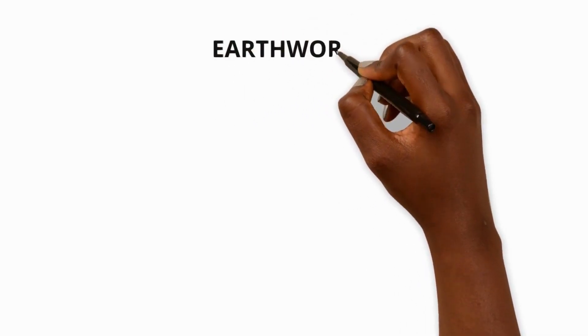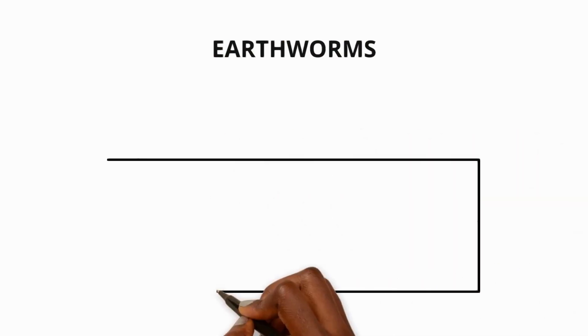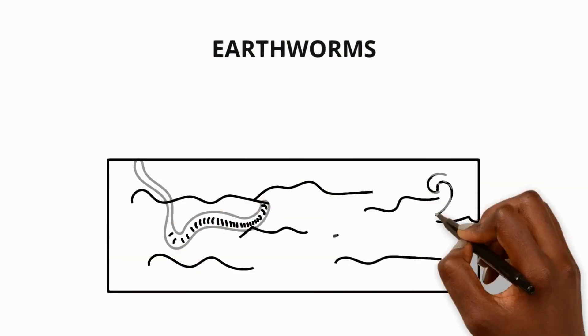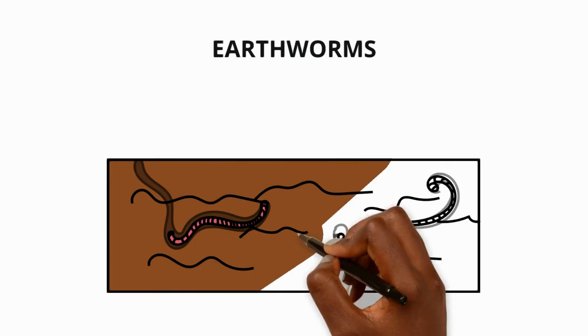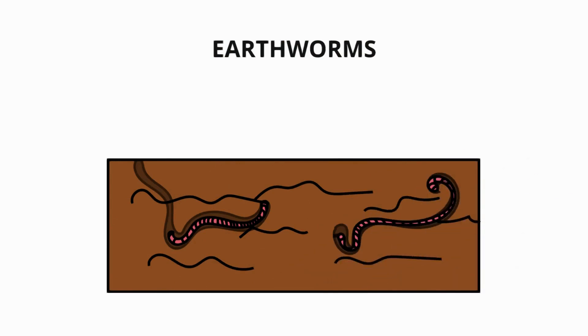Earthworms are important animals because they help soil by mixing it up, creating pockets of air, releasing nutrients into the soil and providing food for many animals.